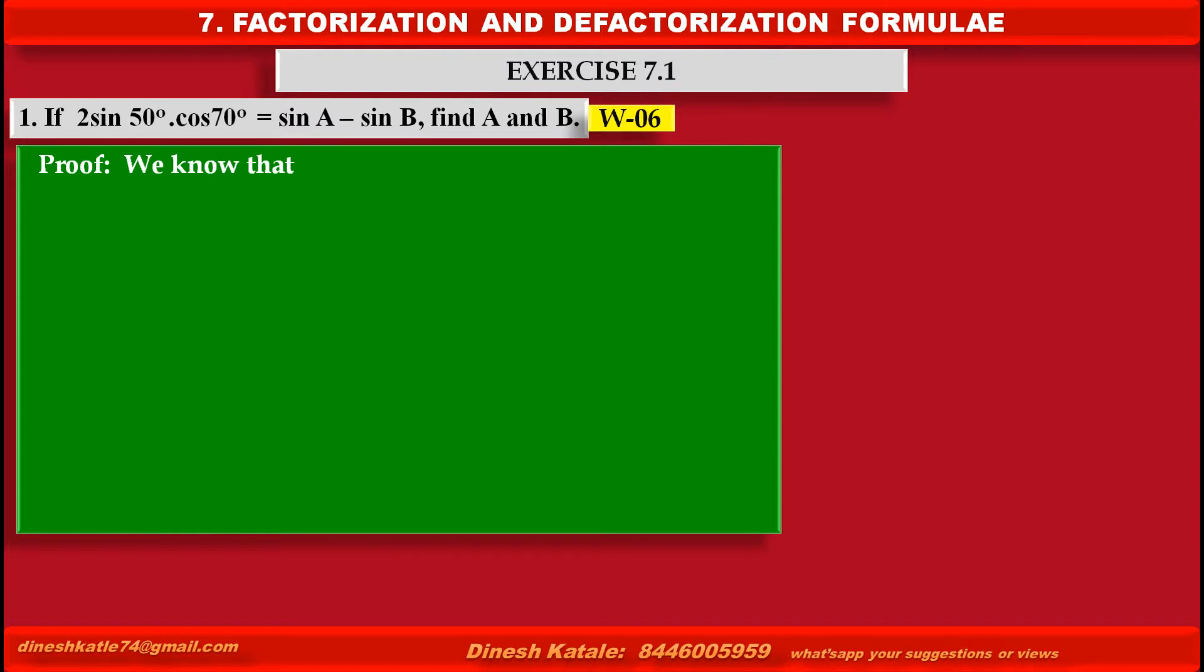Proof: We know that 2 sin A cos B equals sin(A+B) plus sin(A-B).